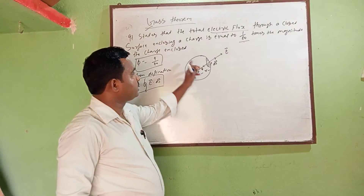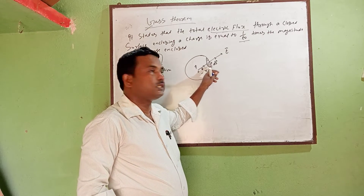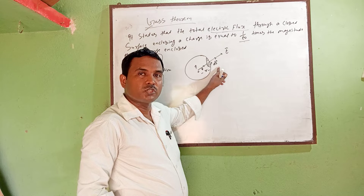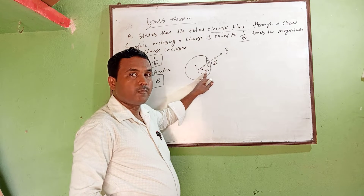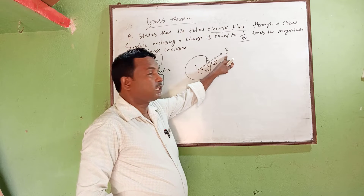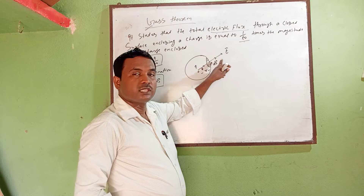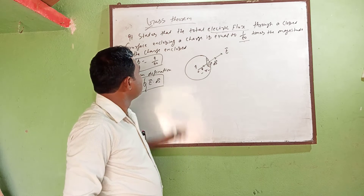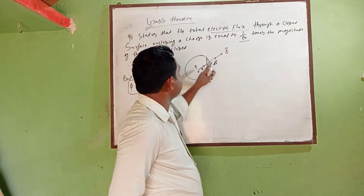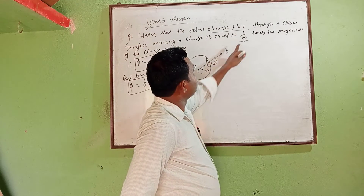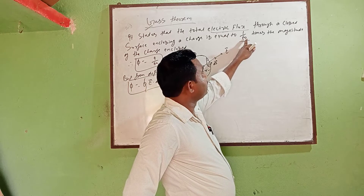Suppose we have a closed surface, and we take an elementary portion DS. The radius of this space is a small part. E is the electric field, and E and DS both are along the same lines. According to this statement, Q is the charge and 1 by epsilon naught is the absolute permittivity.